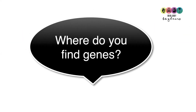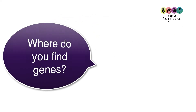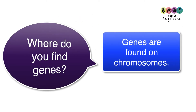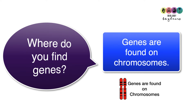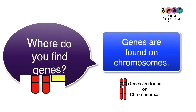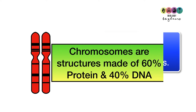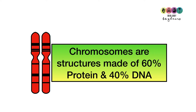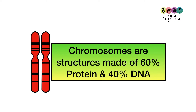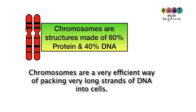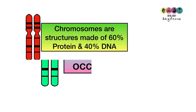Where do you find genes? You find genes at very particular places on chromosomes. Chromosomes are structures found in the nucleus of our cells and they are made of 60% protein and 40% DNA. They're a way of packaging up all of the DNA so it fits perfectly into each one of our cells.